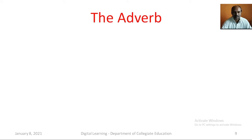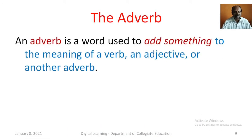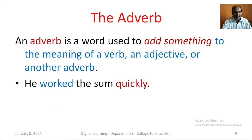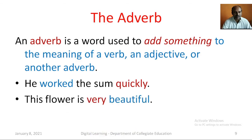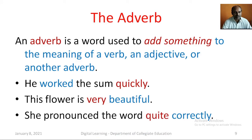The Adverb. An adverb is a word used to add something to the meaning of a verb, an adjective, or another adverb. For example: He worked the sum quickly. This flower is very beautiful. She pronounced the word quite correctly. Here, the word quickly modifies the verb worked, the word very modifies the adjective beautiful, and the word quite modifies the adverb correctly.